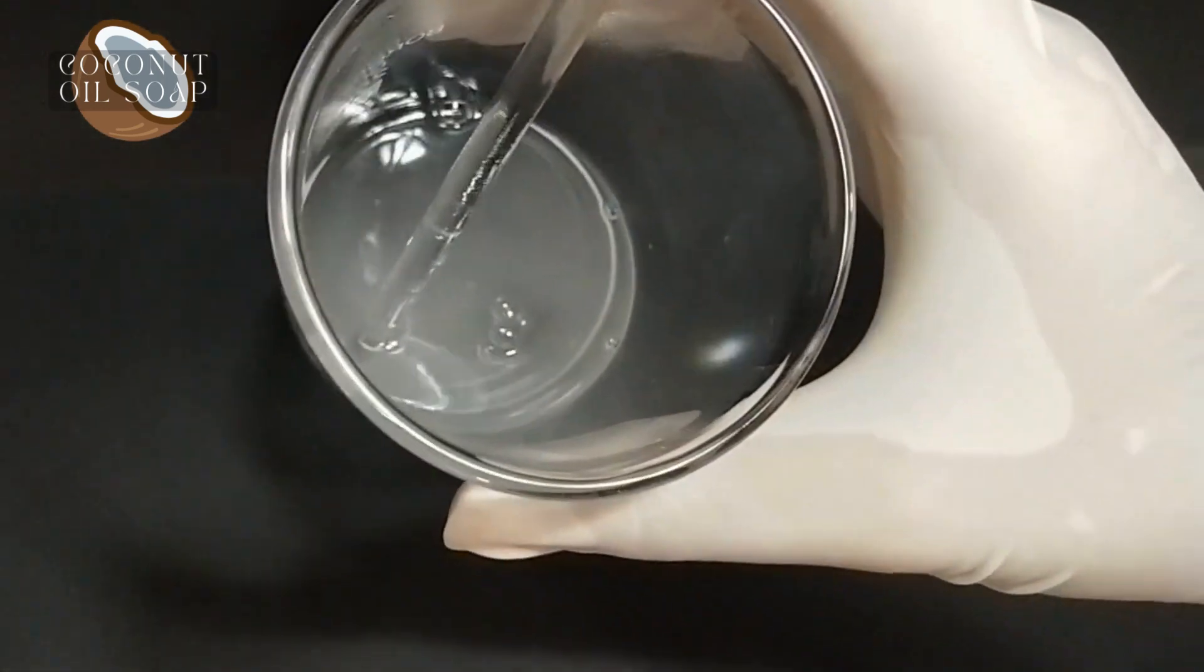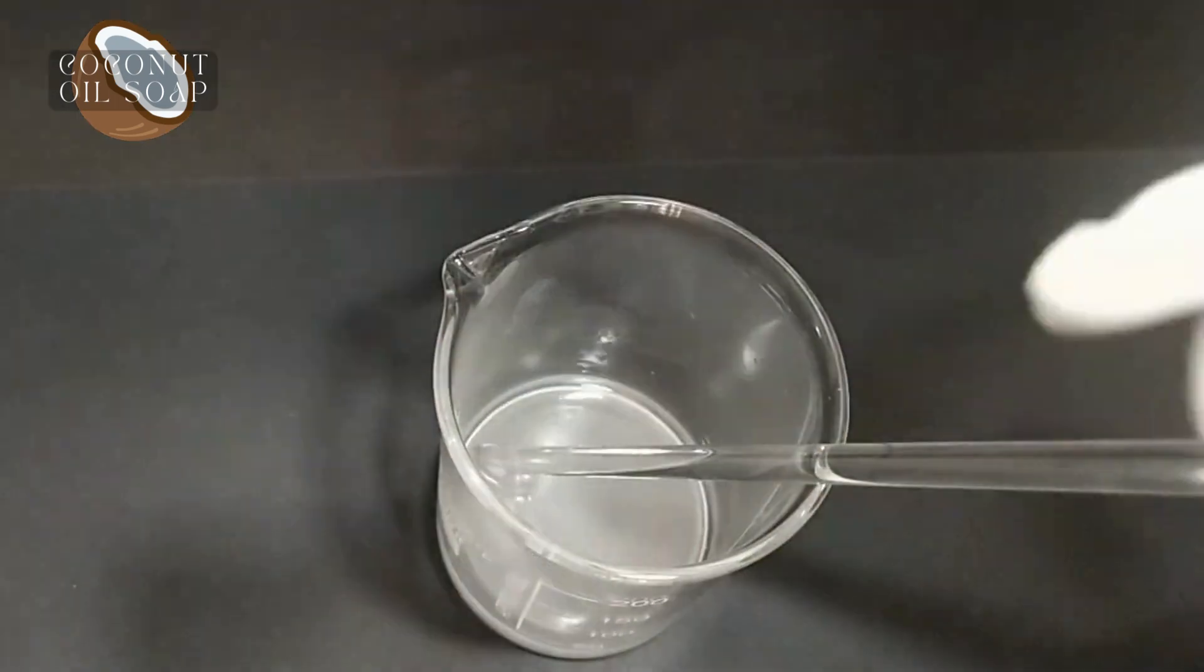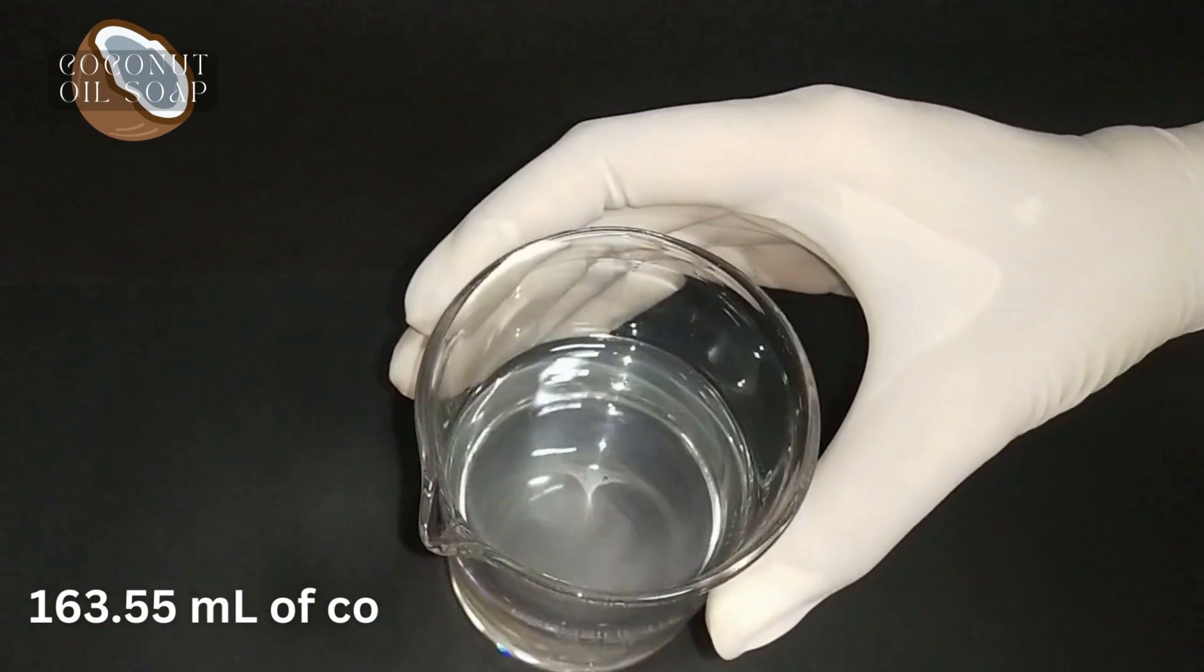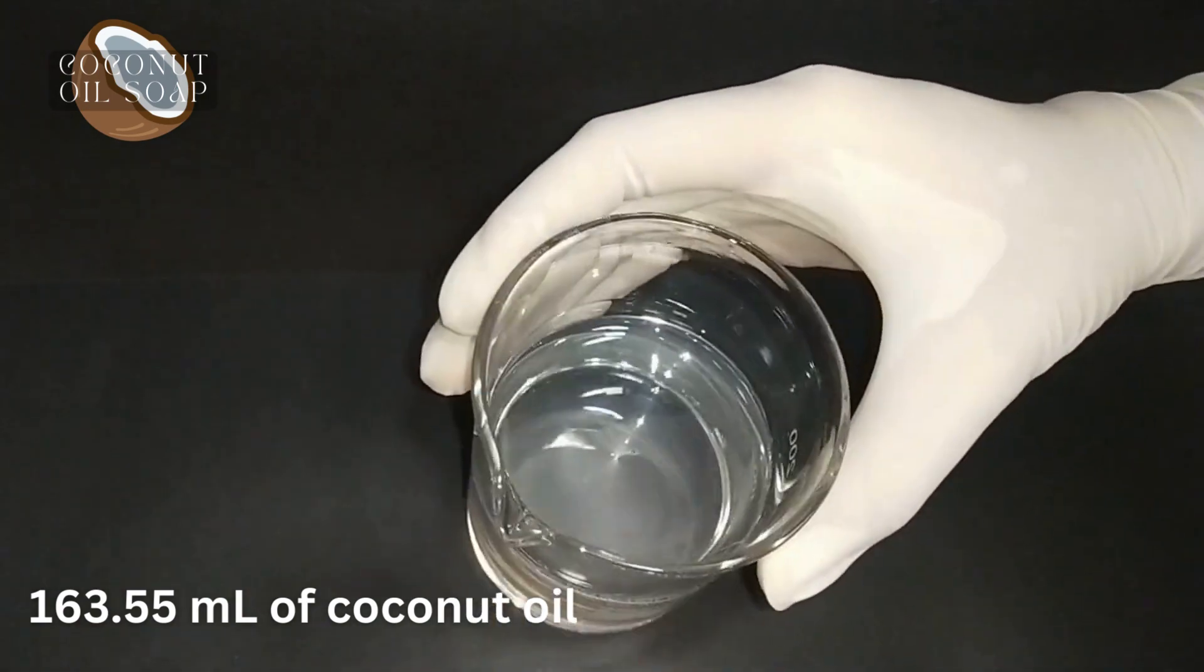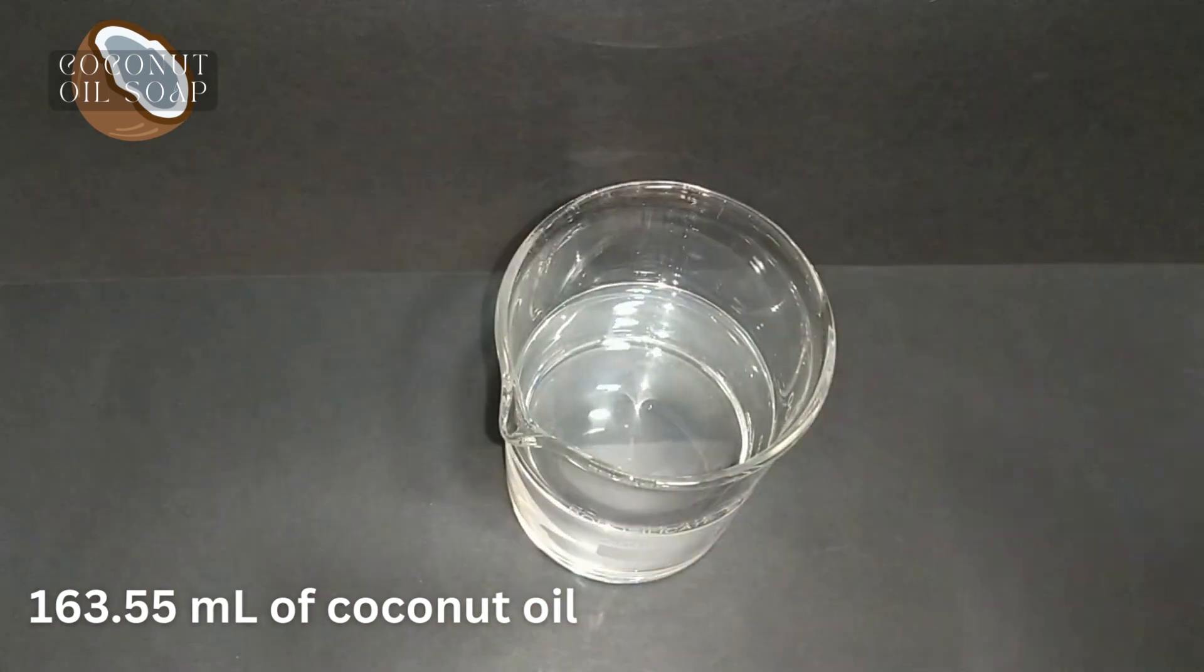After this mixing, keep this solution aside and let it be cool up to 40 to 45 degrees centigrade temperature. Then take 163.55 ml of coconut oil, and you can take any type of coconut oil, but if possible then use virgin coconut oil because it will give much better results.